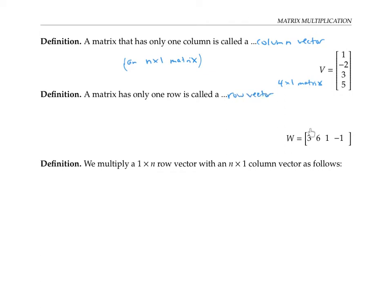A matrix that has only one row is called a row vector. Here's an example of a row vector — it's a length four row vector, or in other words a one by four matrix. In general, a row vector is the same thing as a one by n matrix for some number n.